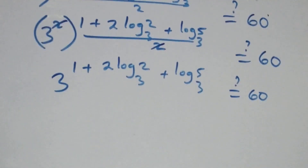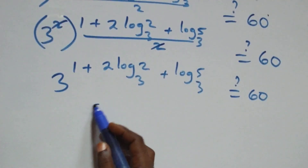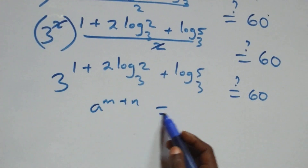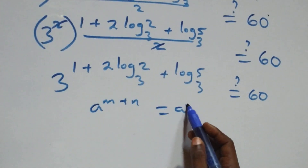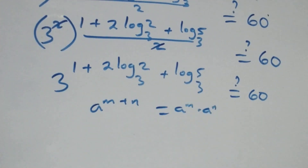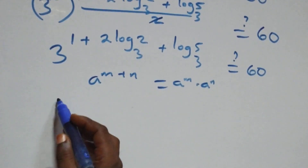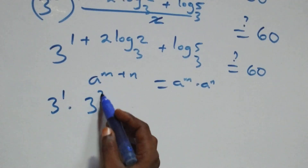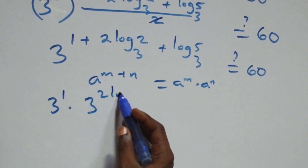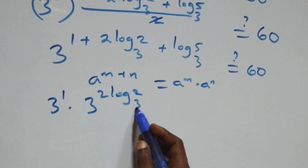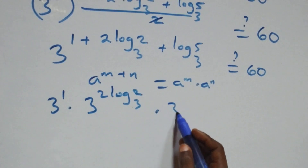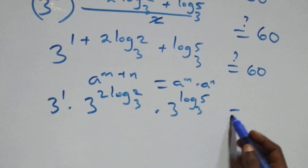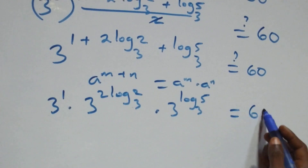Using the law of indices — a raised to power (n plus m) equals a to the n times a to the m — this becomes 3 raised to power 1, times 3 raised to power 2 log 2 base 3, times 3 raised to power log 5 base 3.